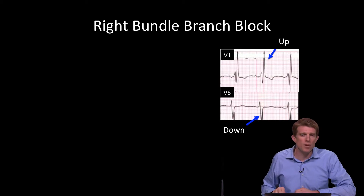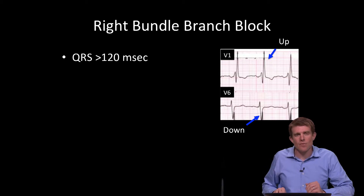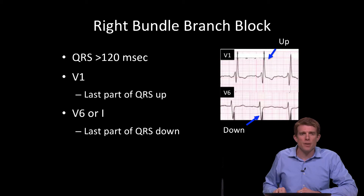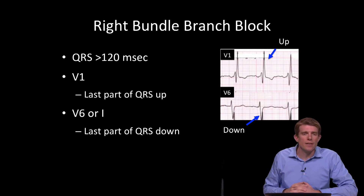So, up in V1 at the end of the QRS complex and down in V6. When we look for a right bundle branch pattern, we want to see that the QRS duration is greater than 120 milliseconds. If it's less, like 100 milliseconds, we're going to call it a nonspecific intraventricular conduction delay. We know that in V1 the last part is up, and in V6 the last part of the QRS is down. If you're not sure when you look at V6, you can also use lead 1 — the last part of the QRS should be down in lead 1 as well.